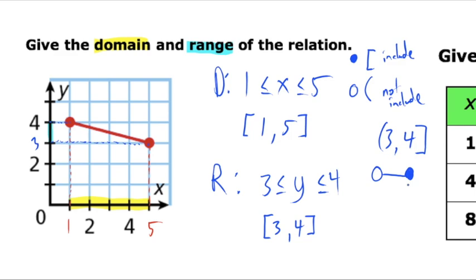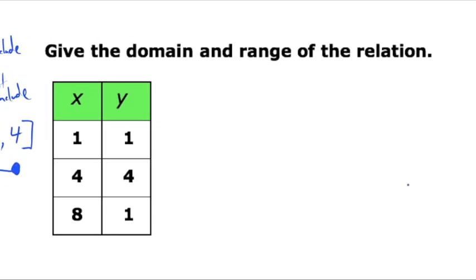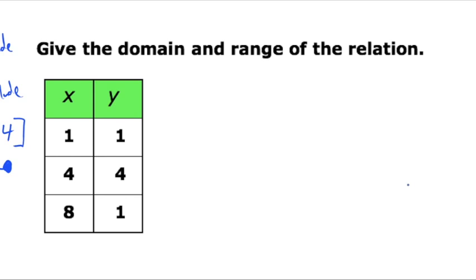This is an example of a continuous relationship — the points are connected using a line, so it is continuous. When we have discrete graphs, on the other hand, we have a list of x and y values and we don't know whether or not these are connected. We only know single points — for example, points at (1,1), (4,4), and (8,1). These are discrete, meaning they are single individual points on the graph.